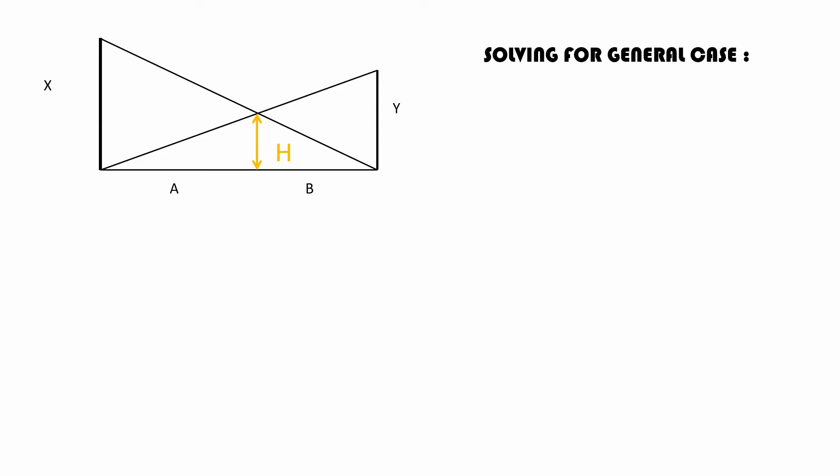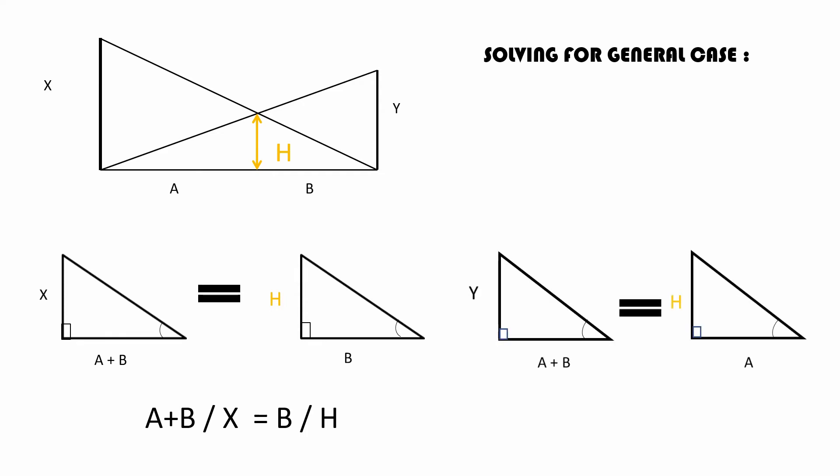We have two pairs of similar triangles in this problem. From the first pair we get the equation (A+B)/X = B/H, and from the second we get another equation: (A+B)/Y = A/H.